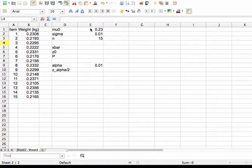We've got the mean under hypothesis zero, which is 0.23 kilograms. We've got the standard deviation, which is 0.01 kilograms.